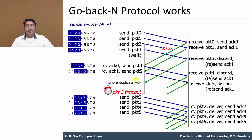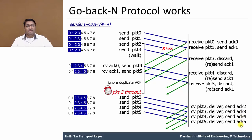After packet 2 times out, it is retransmitted. In between, acknowledgement 0 and acknowledgement 1 are received from packets 0 and 1 respectively. The sender also sends packets 4 and 5, but the receiving side discards them because packet 2 has not been received yet. The receiver sends the previously correctly received packet's acknowledgement. After the timer completes, packet 2 is sent again, received, delivered, and acknowledgement 2 is sent. Then packet 3 is sent, received, delivered, and acknowledgement 3 is sent. Similar processing continues for the remaining packets.